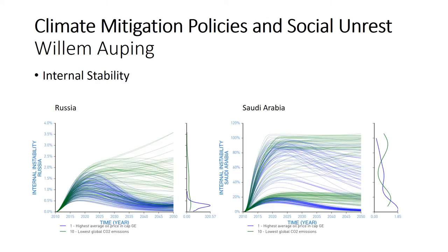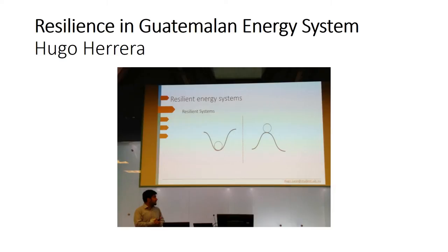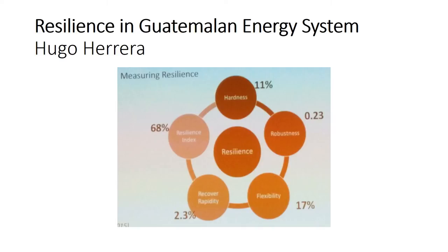Speaking of resilience, Hugo Herrera talked about resilience in the Guatemalan energy system, which is mostly dependent on hydropower. He investigated how the system would react in an extremely dry year. What I liked is that he defined and measured different aspects of resilience: hardness — how large a disturbance must be before it has an impact — flexibility — how much the system can recover — and recoverability. I really appreciated that he tried to rigorously measure resilience.